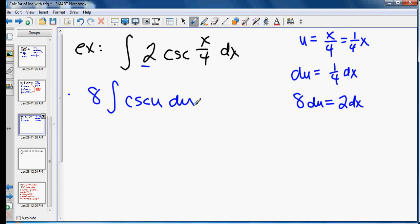And that gives me 8 integral of cosecant u du. And the rule for cosecant is the negative natural log of the absolute value of cosecant u plus cotangent u plus c. So our final answer we will plug in x over 4 in for the u.